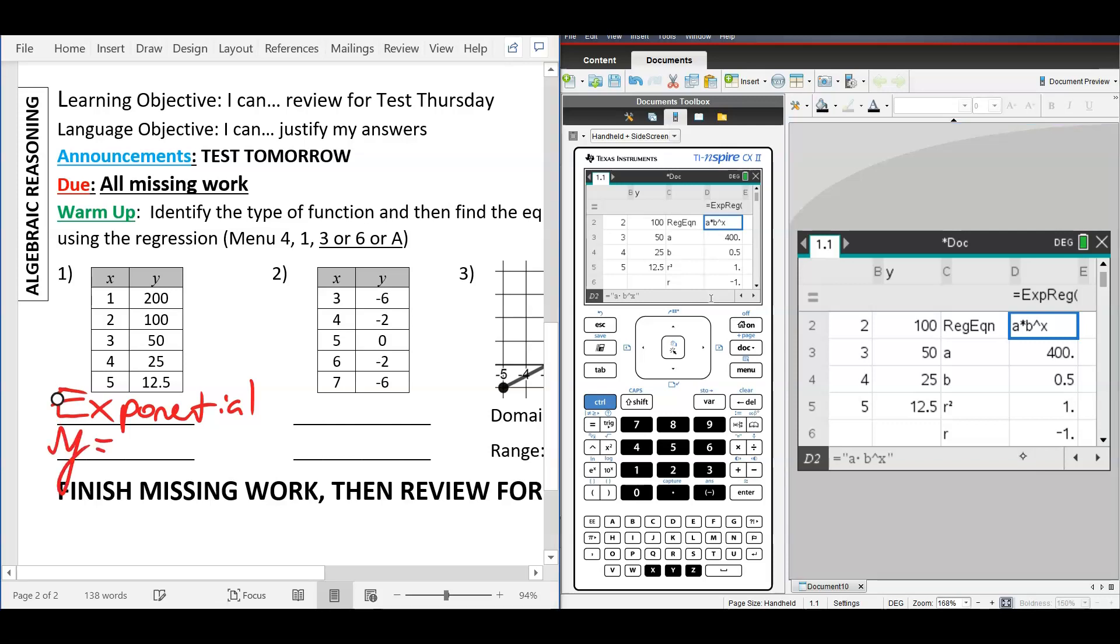Now, if it gives you A and B, you're doing it A times B to the power of X. Let's go ahead and write that equation down. Y equals 400 times 0.5 to the power of X. So you have to be able to write an exponential equation.